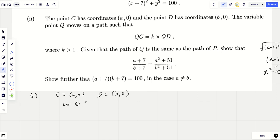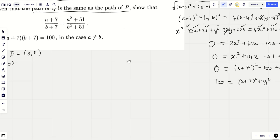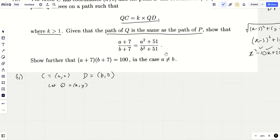So C is (a,0) and D is (b,0), and Q is a point (x,y). Let Q equal (x,y). Then it tells me the variable Q moves on this path where k is bigger than 1. And then it tells you, given that the path of Q is the same as the path of P. Well, if the path of Q is the same as the path of P, that still holds essentially. It needs to be a circle, centre (-7,0), radius 10.